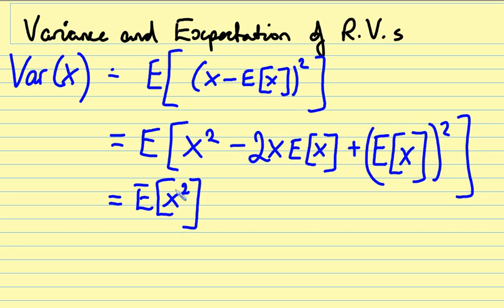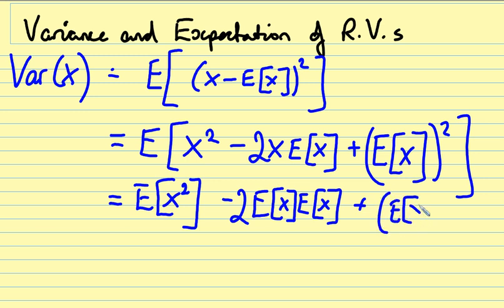This next term is interesting because, of course, 2 is a constant. But what's the expectation of x? Well, that's the expectation of x, and the expectation of the expectation of x is also the expectation of x. And we have, at the end, to add on this expectation of x all squared.